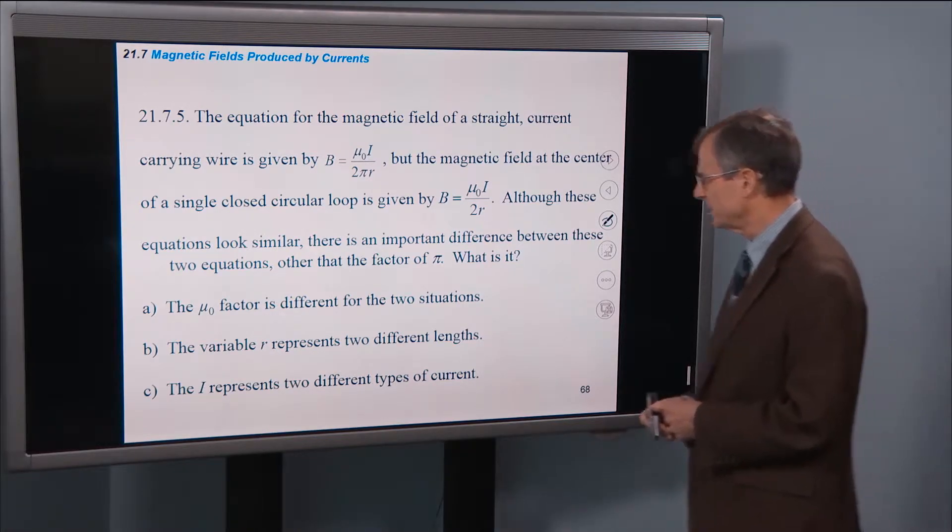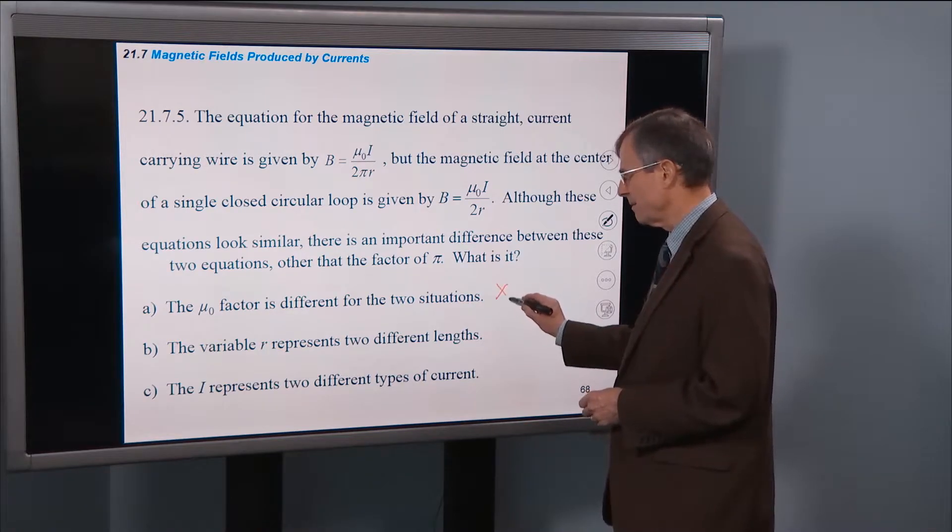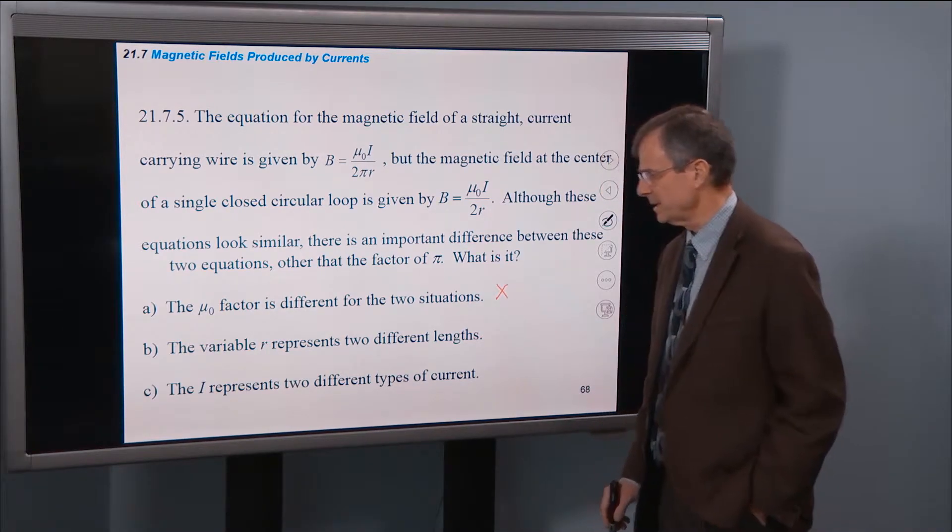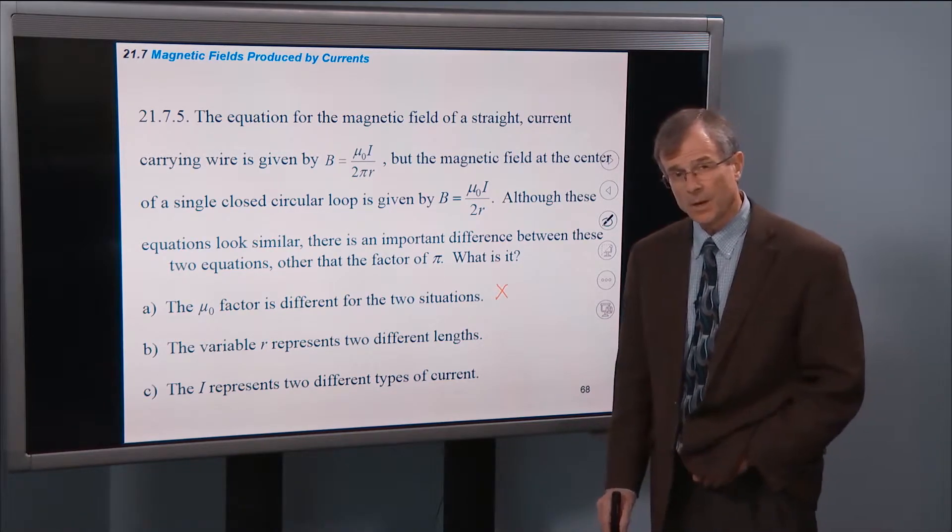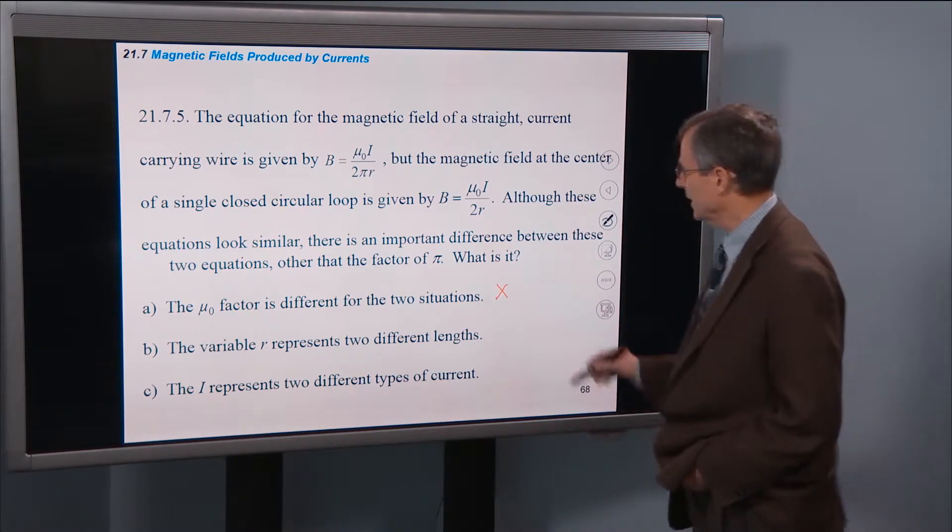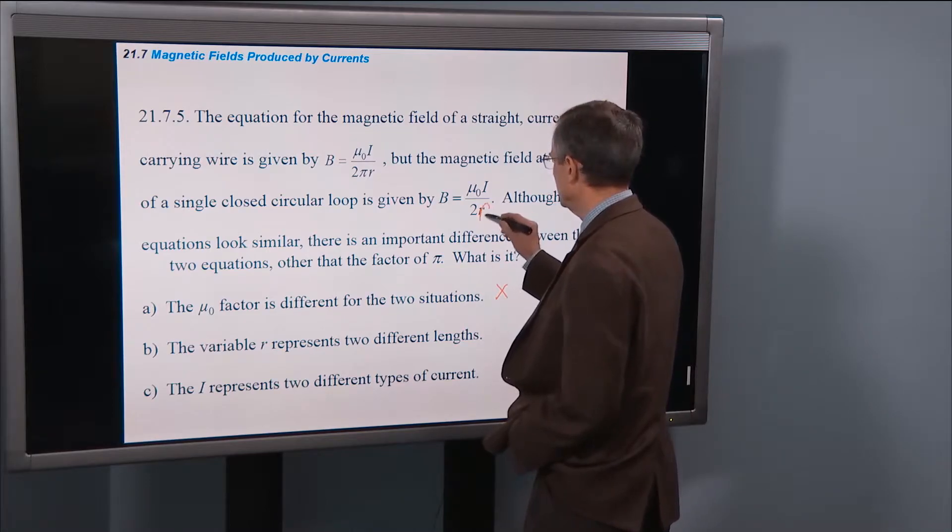µ₀ factor is different. No, they're both the same. Variable r represents two different lengths. Well what's little r? Actually we use big R in this case for a singular closed loop.